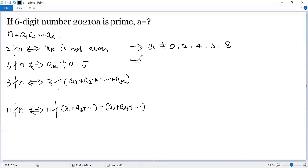And then again, 5 cannot be a factor of the given number, so that means A cannot be 0 and 5.